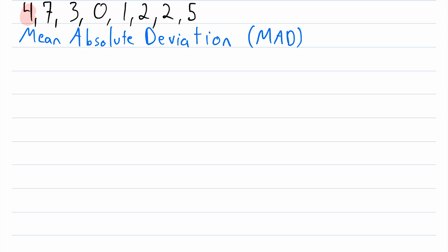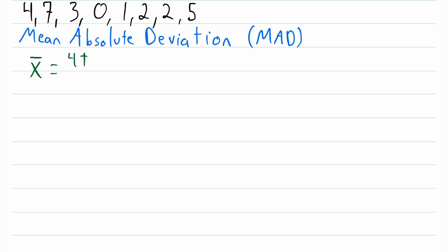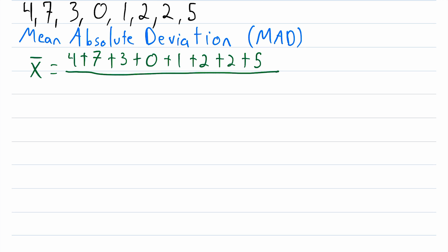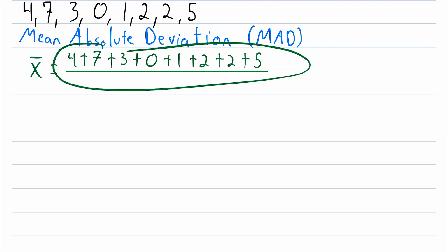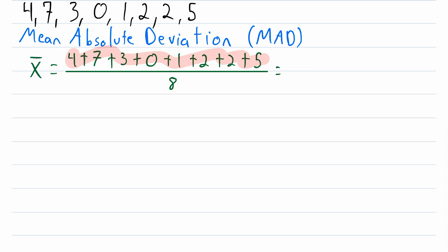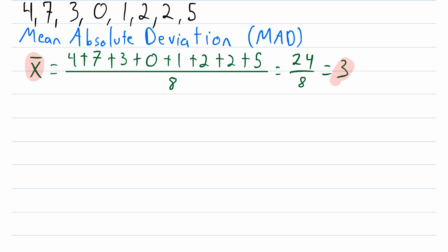So the first thing we need to do is calculate the mean of this data set. We do that by adding up all of the values and then dividing by the total number of values. So x̄ is equal to 4 plus 7 plus 5 — we add up all of the data points and divide by the total number of data points. There are eight total data points, so we divide the sum by eight. Adding all of these values up gives us 24, divided by 8, which equals 3. So the mean of this data set is 3, and we're calling the mean x̄.